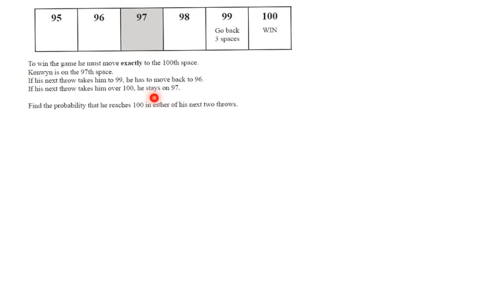If his next throw takes him over 100, he will stay on 97. So if he rolls a four or higher, so let's say he rolls a seven, one, two, three, four, five, six, seven, which is too much, he will stay at place 97. Okay, we have finished analyzing the situation now.